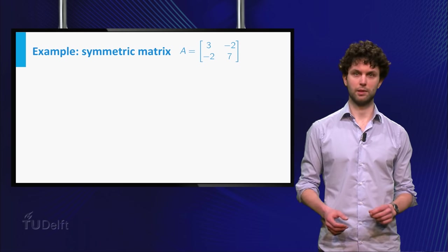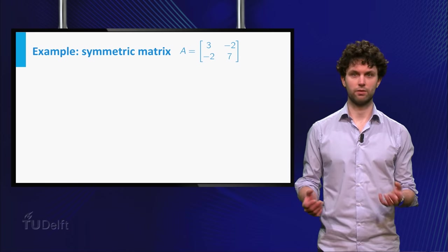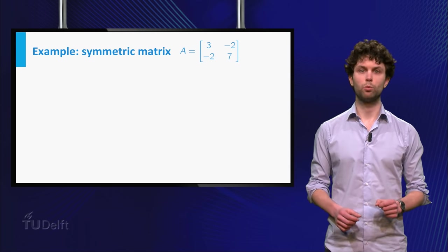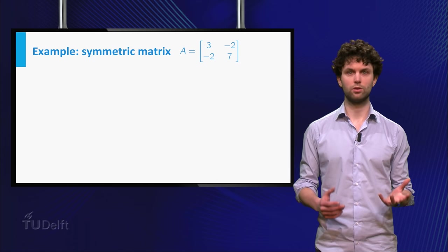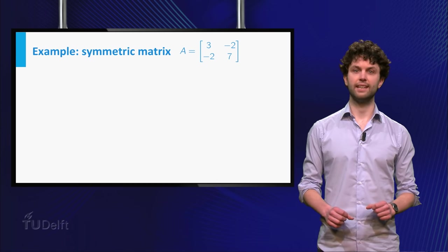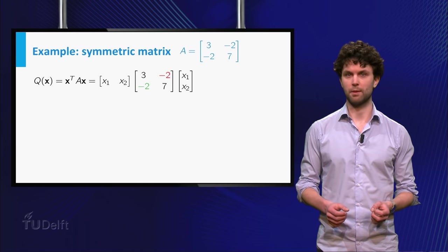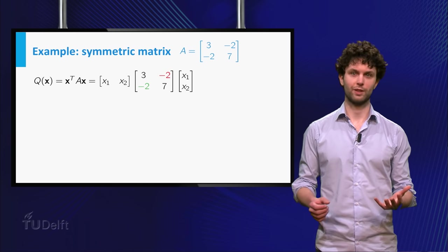Now, let's make life a little bit more interesting by taking a matrix that is not a diagonal matrix. Of course, the entry has to be equal to the entry since A is a symmetric matrix. Let's color these entries so we can see what happens to them when we calculate the quadratic form.